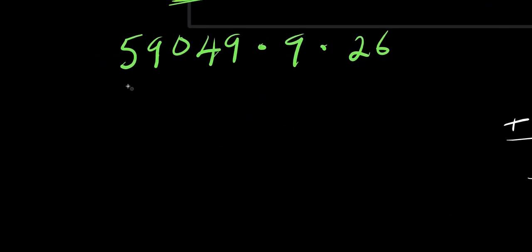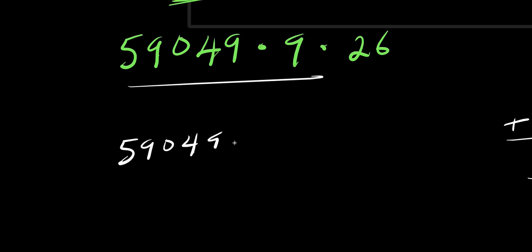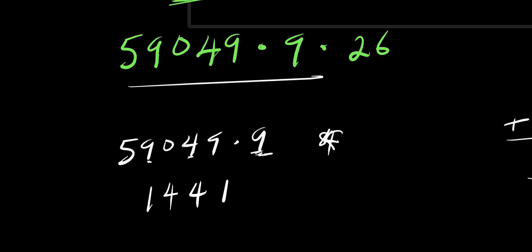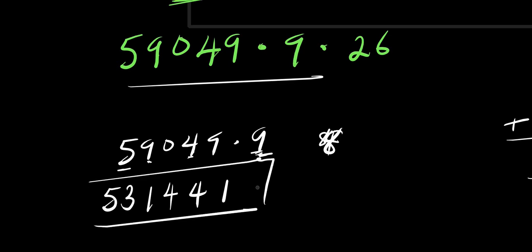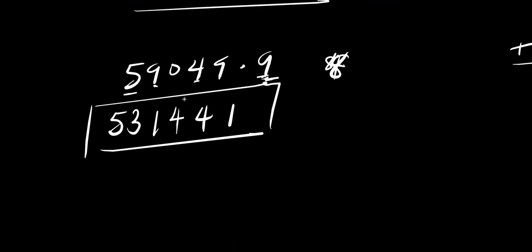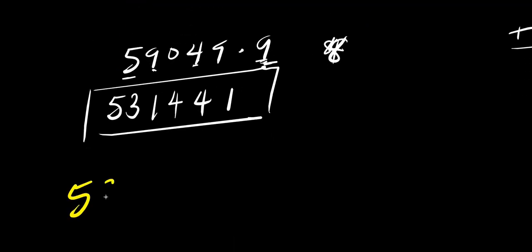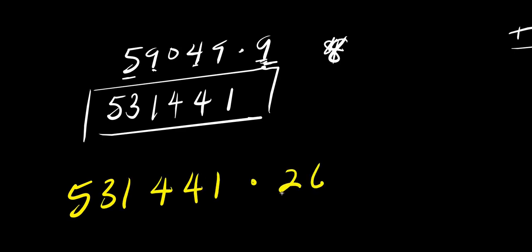So to proceed, we need to multiply 59,049 times 9. We have 9 times 9 is 81 — write 1 carry 8. 9 times 4 is 36 plus 8 is 44 — write 4 carry 4. 9 times 5 is 45 plus 4 is 49 — write 9 carry 4. Continuing: 45 plus 8 is 53. So 59,049 times 9 gives us 531,441. This is the number we are going to use to multiply by 26 to get our final answer.